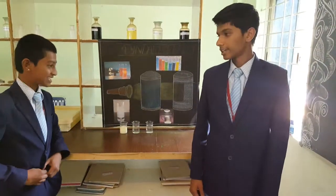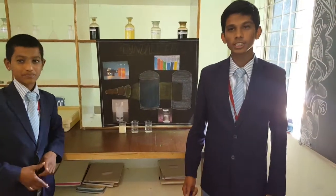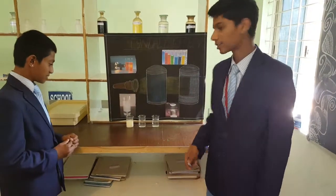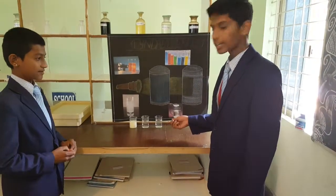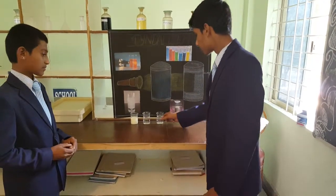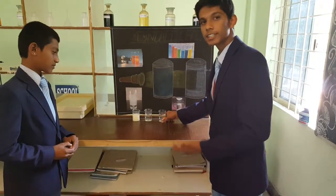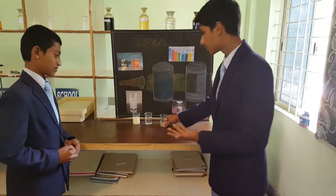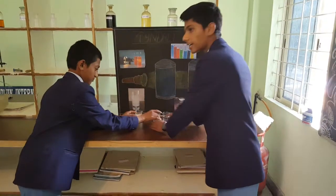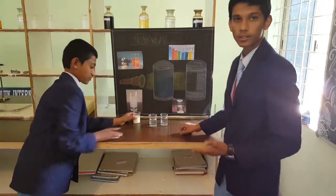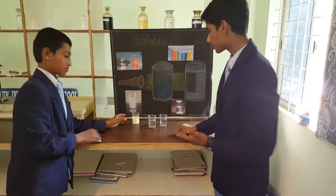A solution is a homogeneous mixture whereas a colloid is a heterogeneous mixture. A true solution can pass light through it, but a colloidal solution does not — it scatters the light.